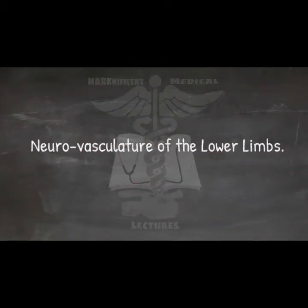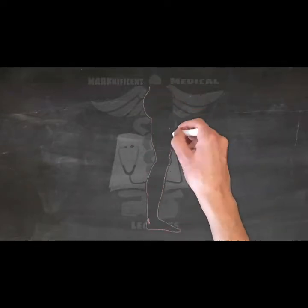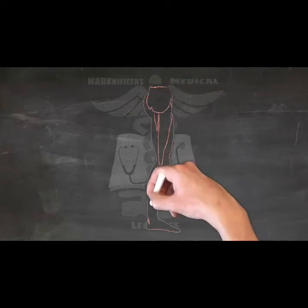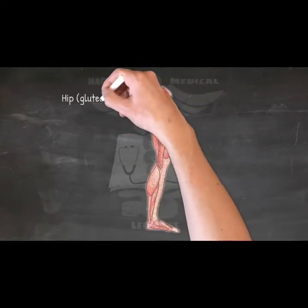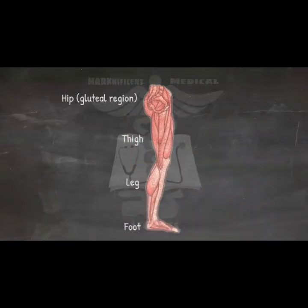Neurovasculature of the lower limbs. You might take actions like standing, walking, or jumping for granted, but they would be impossible without the extraordinary ability of your legs to perform coordinated movements. Such complex actions require an equally complex anatomy and neurovasculature supply. The lower extremity is divided into four main regions: hip, thigh, leg, and foot. In this video, we're going to study the most important arteries, veins, and nerves passing through and supplying each of these regions, as well as their respective branches.